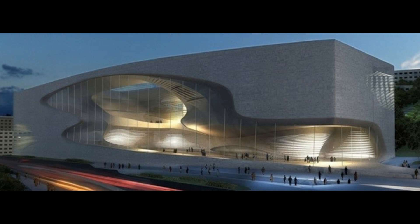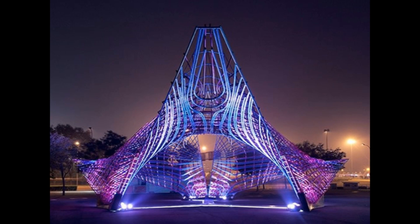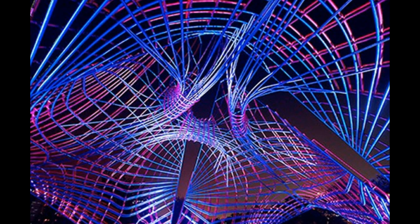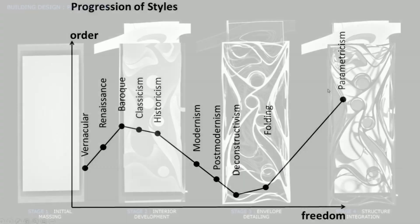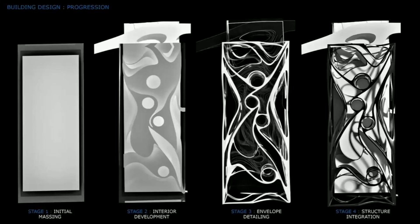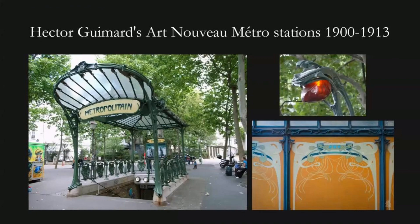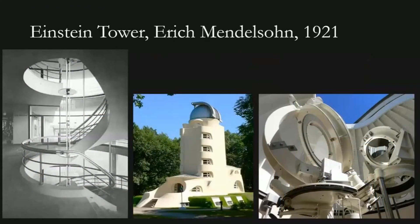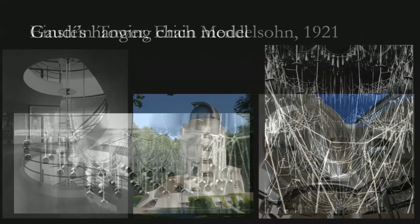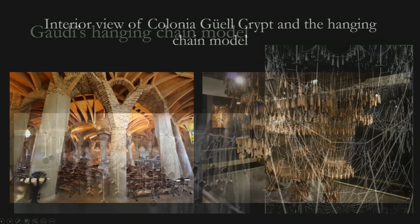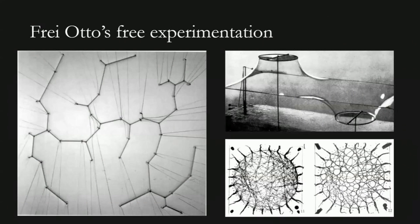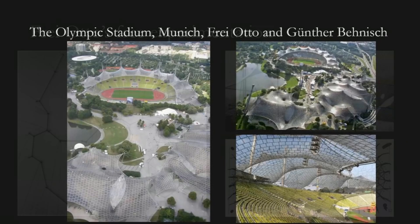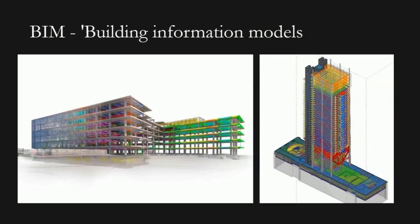At its core, parametric architecture is a design approach that leverages the power of algorithms to create complex, responsive, and dynamic forms. It draws inspiration from historical pioneers such as Hector Guimard, Eric Mendelssohn, Antoni Gauthier, and Otto Frey, who introduced unconventional ideas and methods that laid the groundwork for this transformative architectural movement. The emergence of parametric architecture in the late 20th century was made possible by advancements in computational technology.